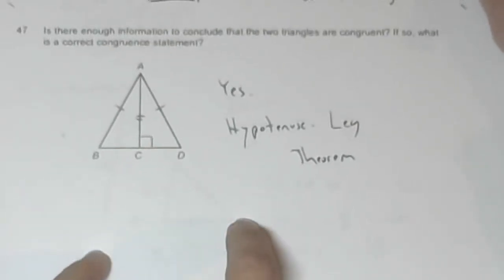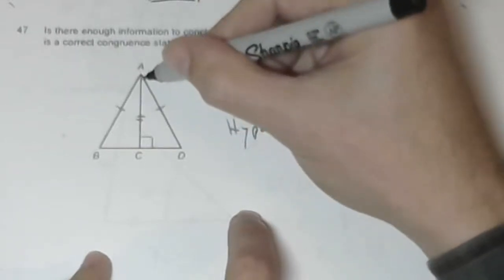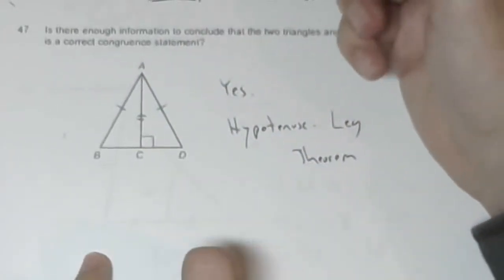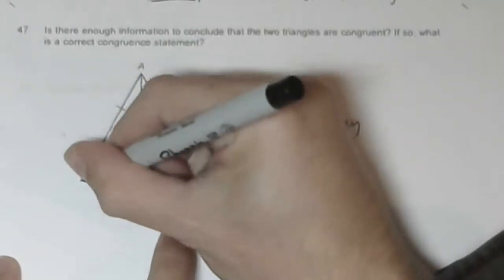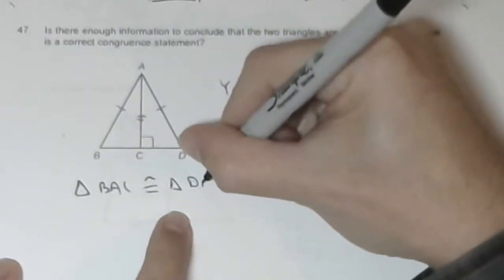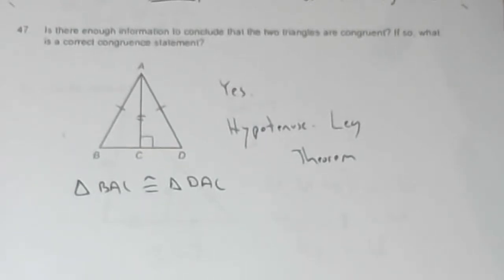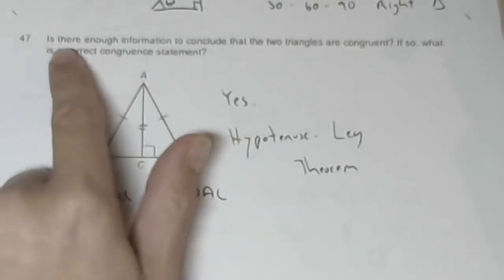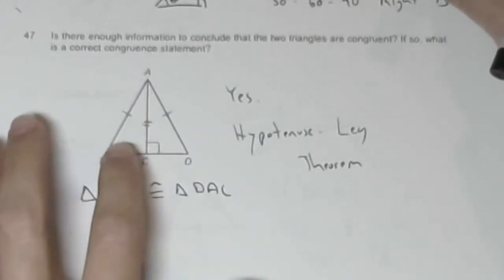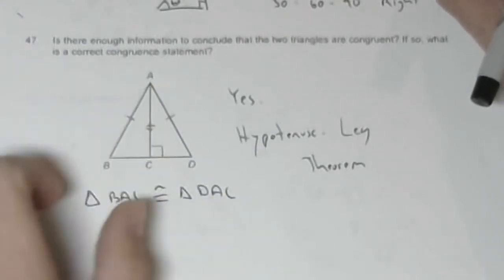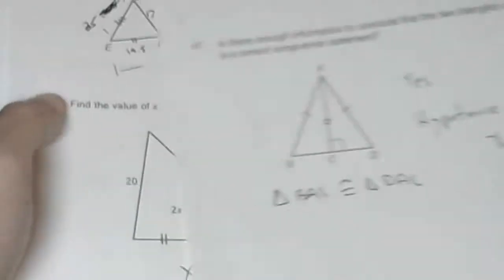Problem 47. Is there enough information to conclude that two triangles are congruent? If so, what is the correct congruence statement? I show AC is equal to itself by the reflexive property, so we have the hypotenuse leg theorem. If I want the congruent statement, I'd say triangle BAC is congruent to triangle DAC. Is there enough information? To me that's yes, because I should be able to just add that. I can assume that these segments actually meet at point A.